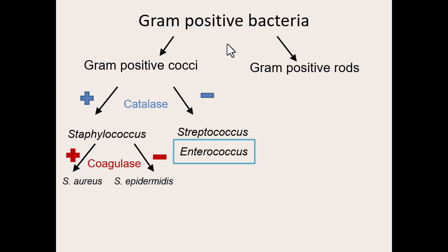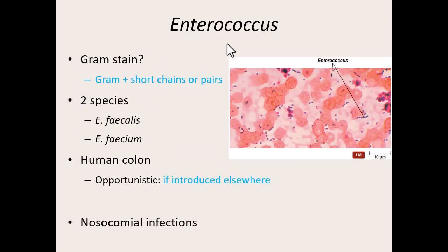Our next genus — still gram-positive cocci, still catalase negative, so no bubbles because they don't make catalase — is Enterococcus. If something has 'entero' in its name, where would we find it in the body? The intestines. If you have gastroenteritis, that just means inflammation of the stomach and intestines. Anything 'entero' is intestinally found. So Enterococcus are cocci-shaped bacteria generally found in the digestive tract.